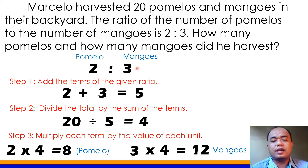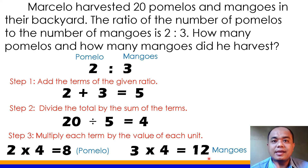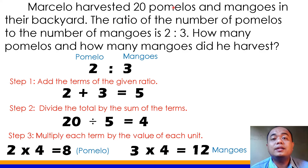Paano natin ma-i-check kung tama yung sagot? Kapag na-add yung 8 pumelos at yung 12 mangoes, ang kabuuan ay 20. So, 8 plus 12 equals 20. Ibig sabihin, 8 talaga ang pumelo at 12 ang mangoes na na-harvest ni Marcelo sa kanilang backyard. Yan kung paano natin hinati ang 20 fruits in all.